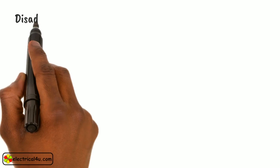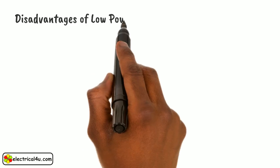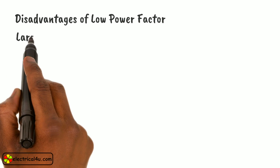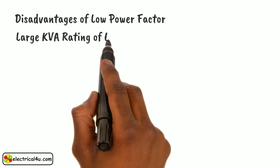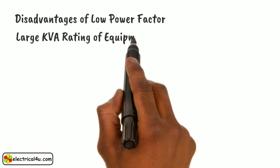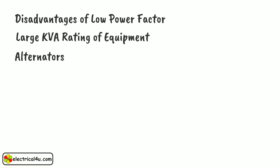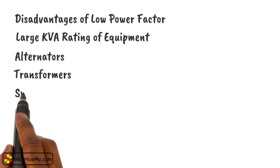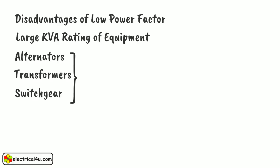Let us discuss the disadvantages of low power factor in the AC system one by one. The first point is large KVA rating of equipment. The electrical machineries such as alternators, transformers, and switchgears are rated in KVA, not in KW.